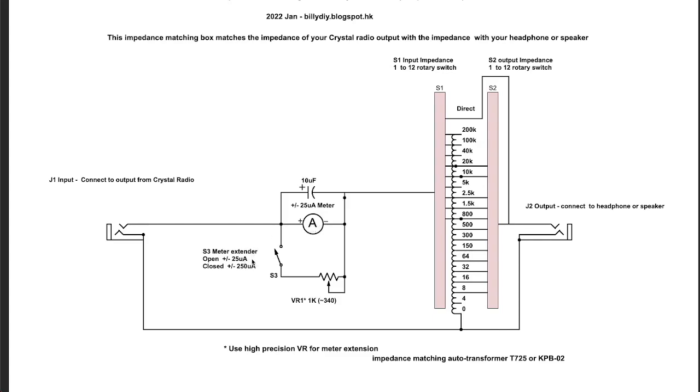We need to use a high precision variable resistor, those that use a screwdriver and you need to turn five or six turns to go from one end of the resistor to the other end. This will allow you to keep the position.